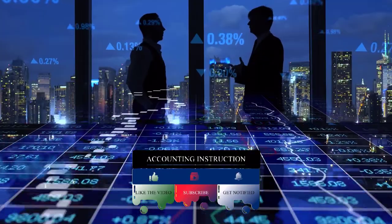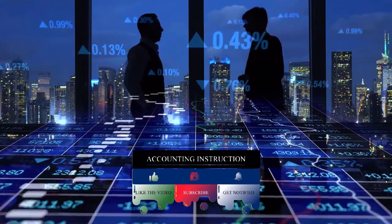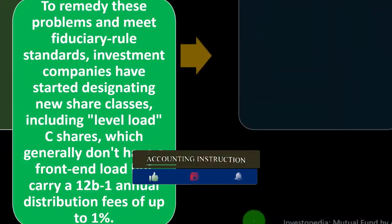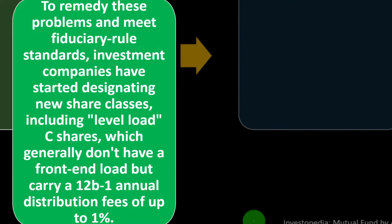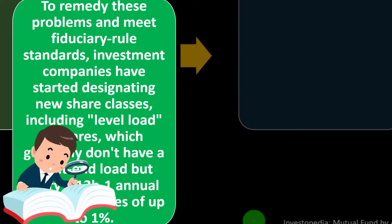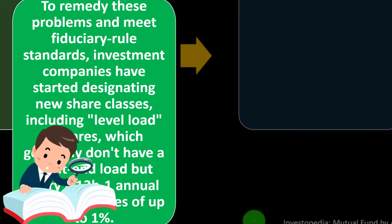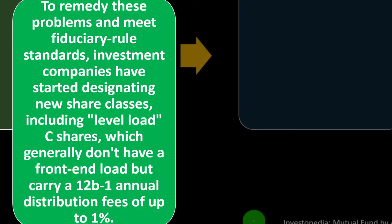You might also use other tools like a Vanguard account and do more of your own research. In any way that you pursue this, you want to do your own research and make sure you understand the financial incentives of the people you're working with. To remedy these problems and meet fiduciary rule standards, investment companies have started designing new share classes, including a 'level load' in C shares.